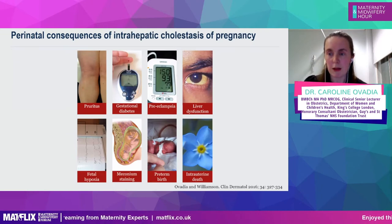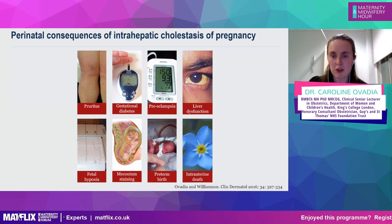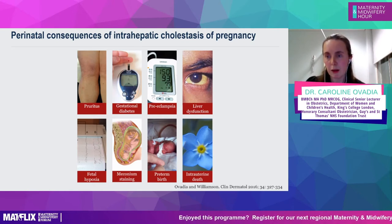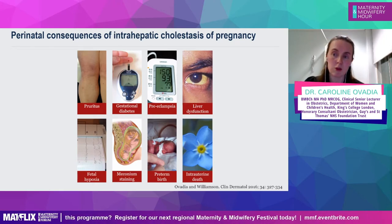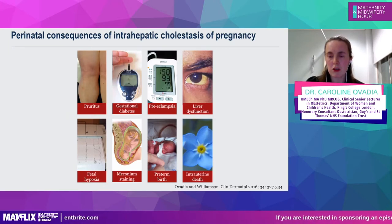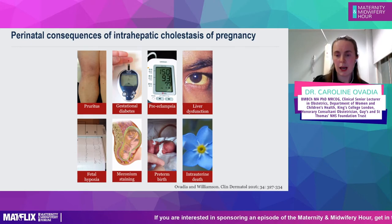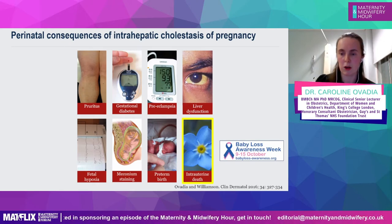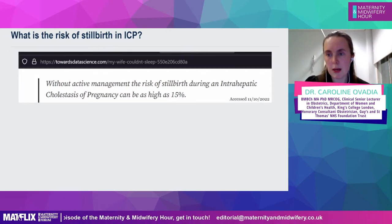The consequences of ICP include itching, gestational diabetes, preeclampsia, and liver dysfunction. About 10% of women will develop jaundice — yellowing of the eyes and dark urine — and sometimes steatorrhoea, a fatty stool that can impair absorption of fat-soluble vitamins like vitamin K, which is important in blood clotting. For the baby, there is associated hypoxia, increased likelihood of passing meconium, preterm birth, and stillbirth — which is particularly important and where I'll spend most of my time.